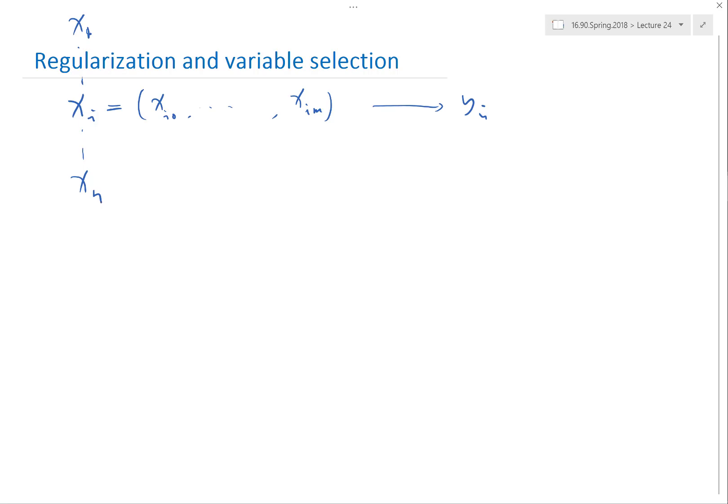There are two approaches that can remedy that. One is variable selection, that is to choose a subset of these M explanatory factors to use to predict.